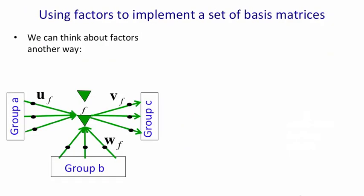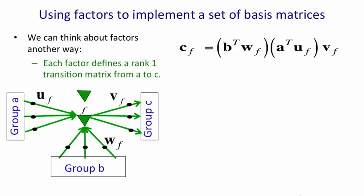There's another way we can think about these factors that gives more insight into what's going on. Each of the factors actually defines a very simple kind of transition matrix. It's a transition matrix that has rank 1. So the equation we had on the previous slide treats a factor as computing two scalar products, multiplying them together, and then using that as a weight on the outgoing vector V.